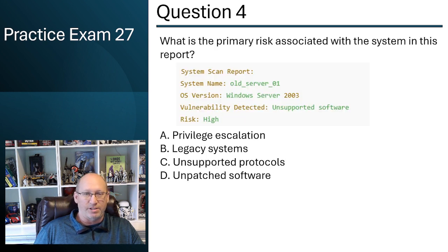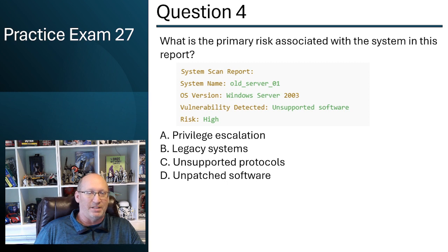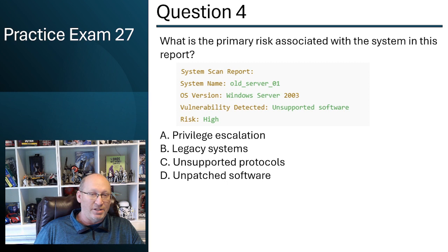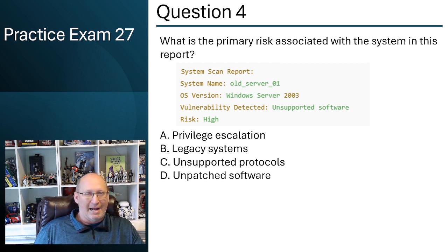Question number four — what is the primary risk associated with this system? In this report, we see a system scan showing an old server, Windows Server 2003, unsupported software with a high risk. We have privilege escalation — I can see two problems here, and privilege escalation is not one of the main ones. We see legacy systems annotated as Windows Server 2003, and we are now in 2025. We also see unpatched software — the vulnerability detected is unsupported software. B and D are the top answers on the board.